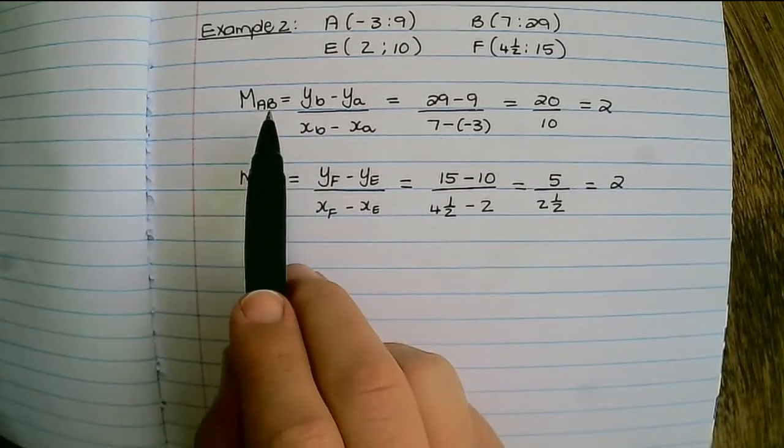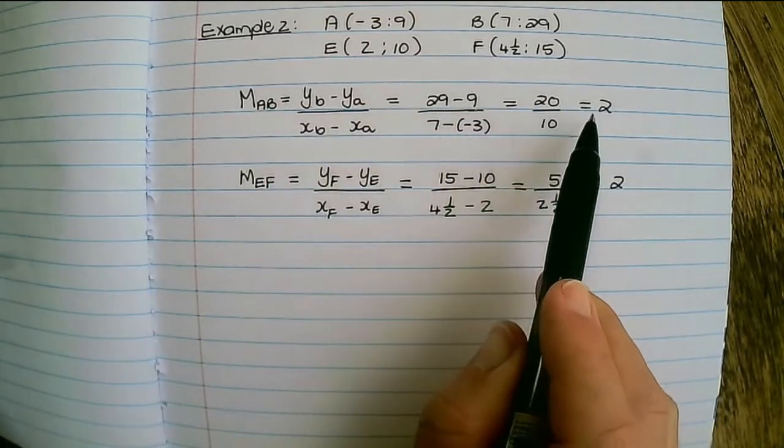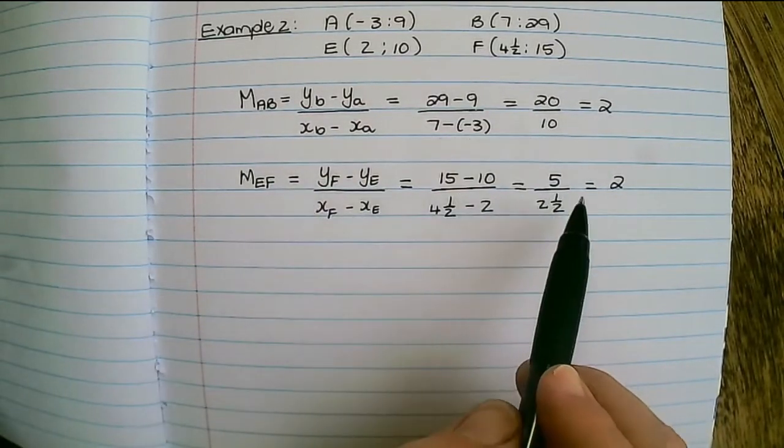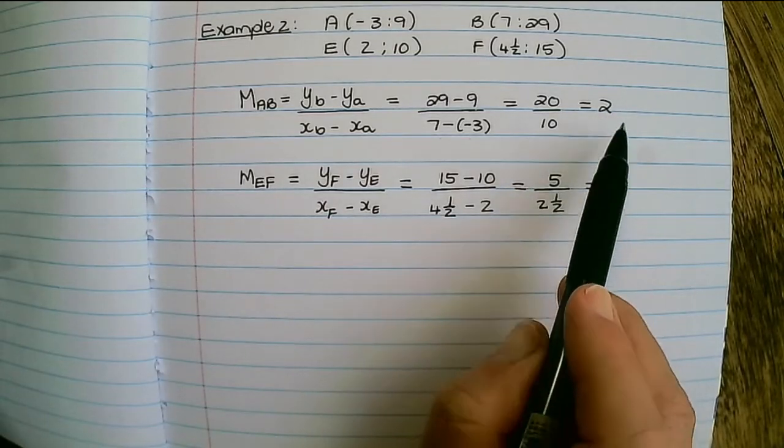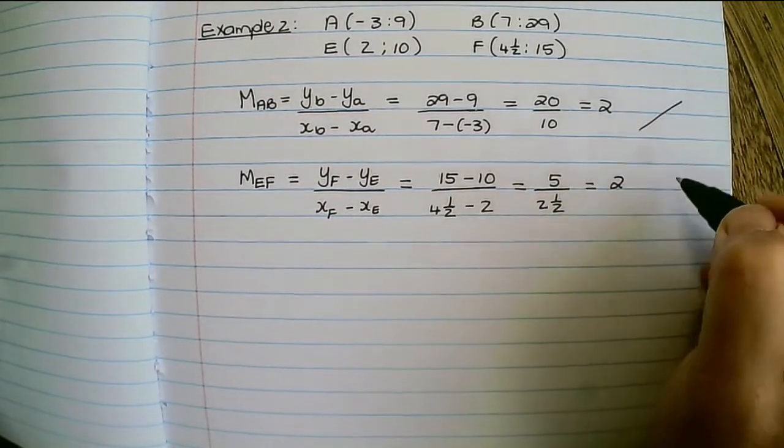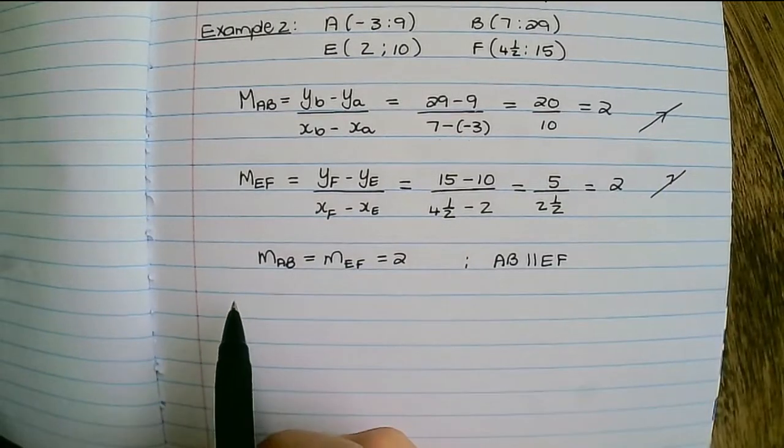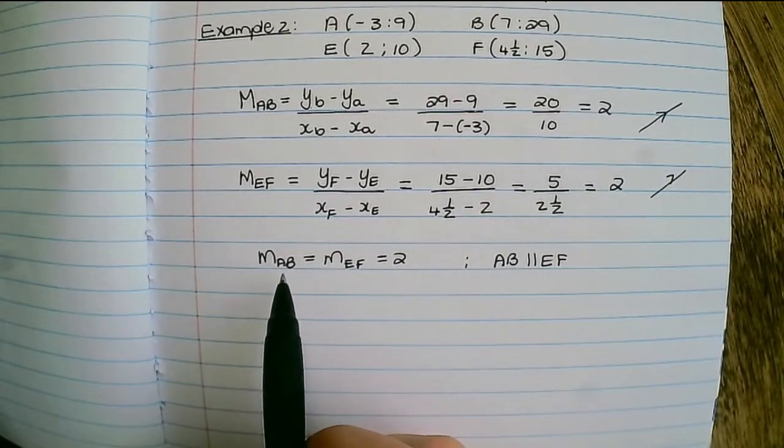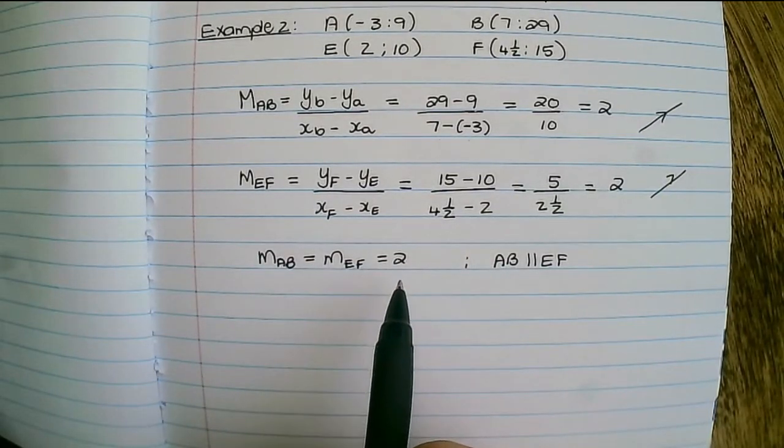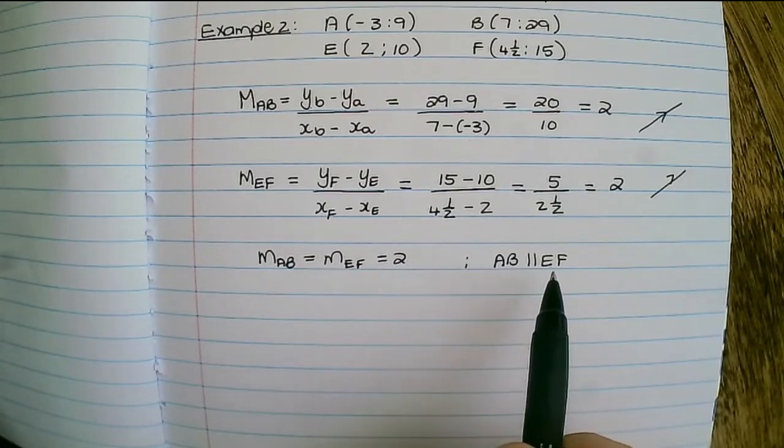So we can see that both of these lines are increasing because they have positive gradients. And also because they have the exact same gradient, we can conclude that they are parallel lines.